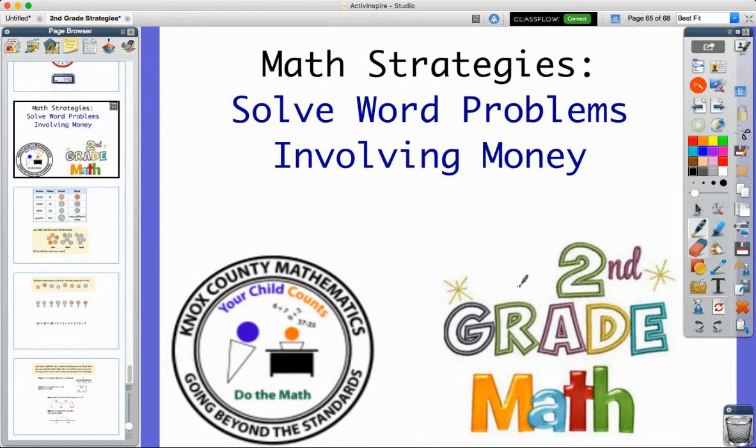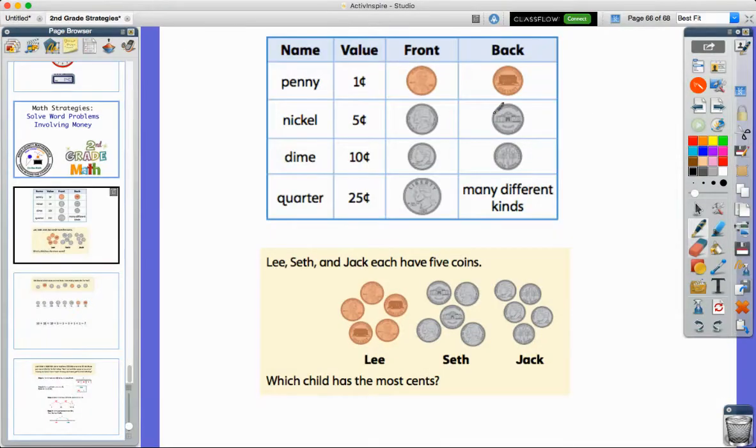In this Ready Math lesson they give us a nice chart to help us understand the value of the change you might find in your pocket, in a piggy bank at home, or in your parents' car. The four things we use most that we're going to start with are penny, nickel, dime, and quarter.